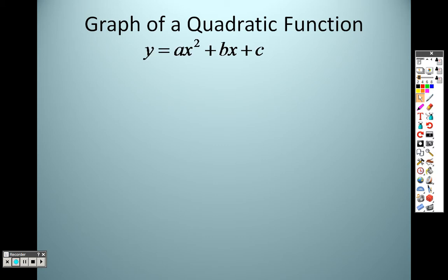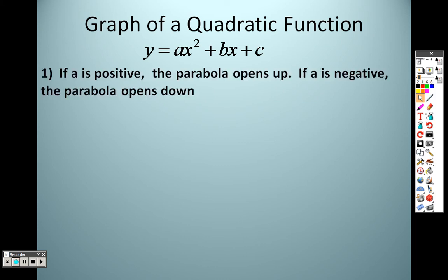Graph of a quadratic function. So when you're graphing that, it takes the form ax-squared plus bx plus c. So first, if a is positive, the parabola opens up. If a is negative, the parabola opens down. Okay, so that leading coefficient judges where it's going to open.